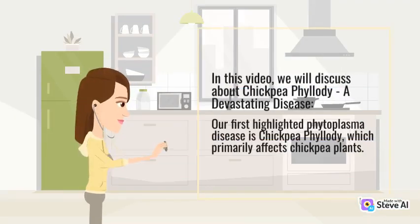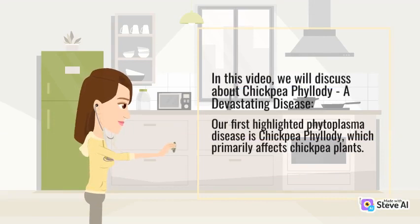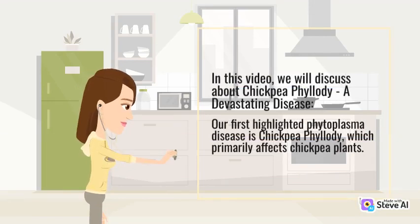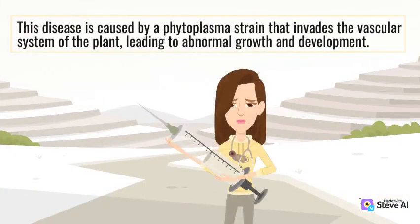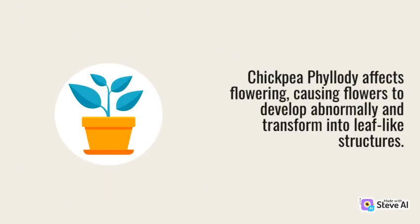In this video, we will discuss chickpea phyllody, a devastating disease. Our first highlighted phytoplasma disease is chickpea phyllody, which primarily affects chickpea plants. This disease is caused by a phytoplasma strain that infiltrates the vascular system of the plant, leading to abnormal growth and development. Chickpea phyllody affects flowering, causing flowers to develop abnormally and transform into leaf-like structures.